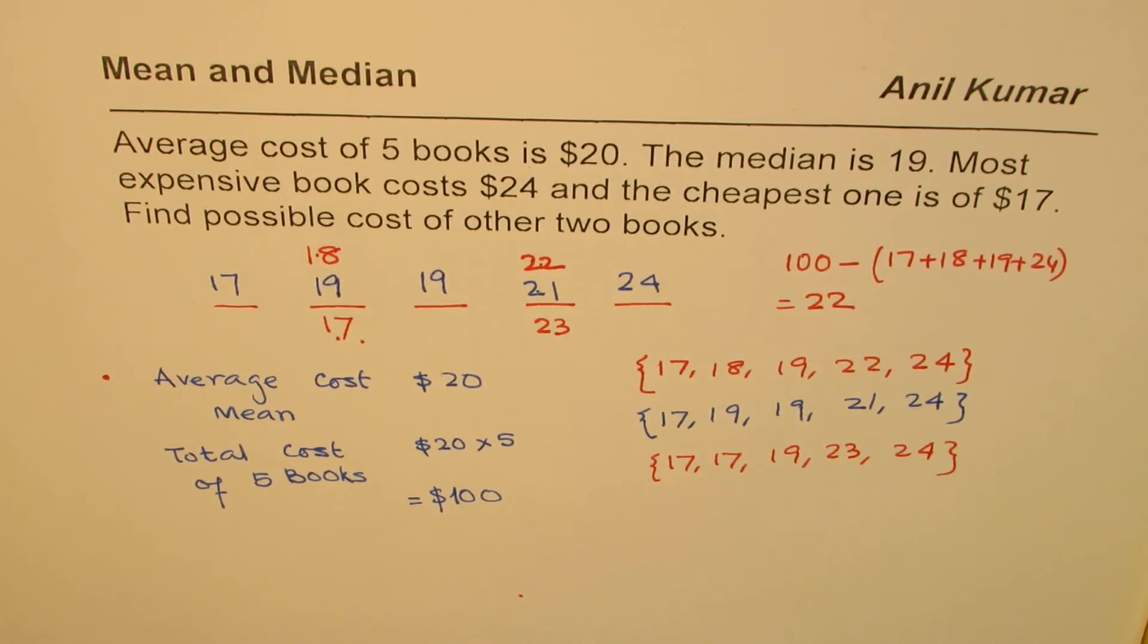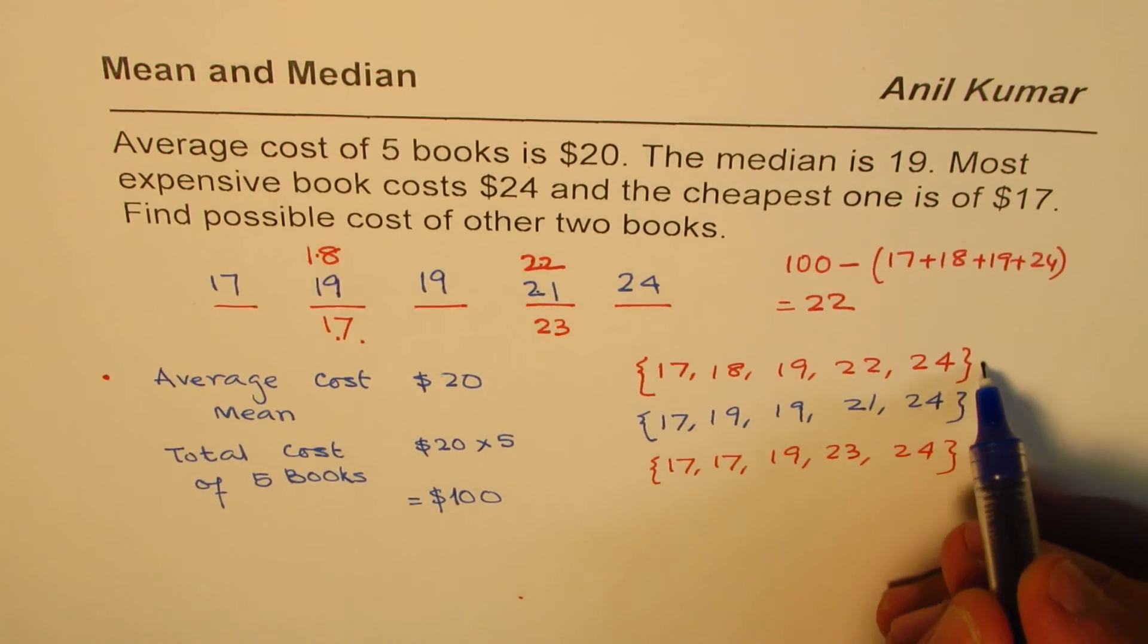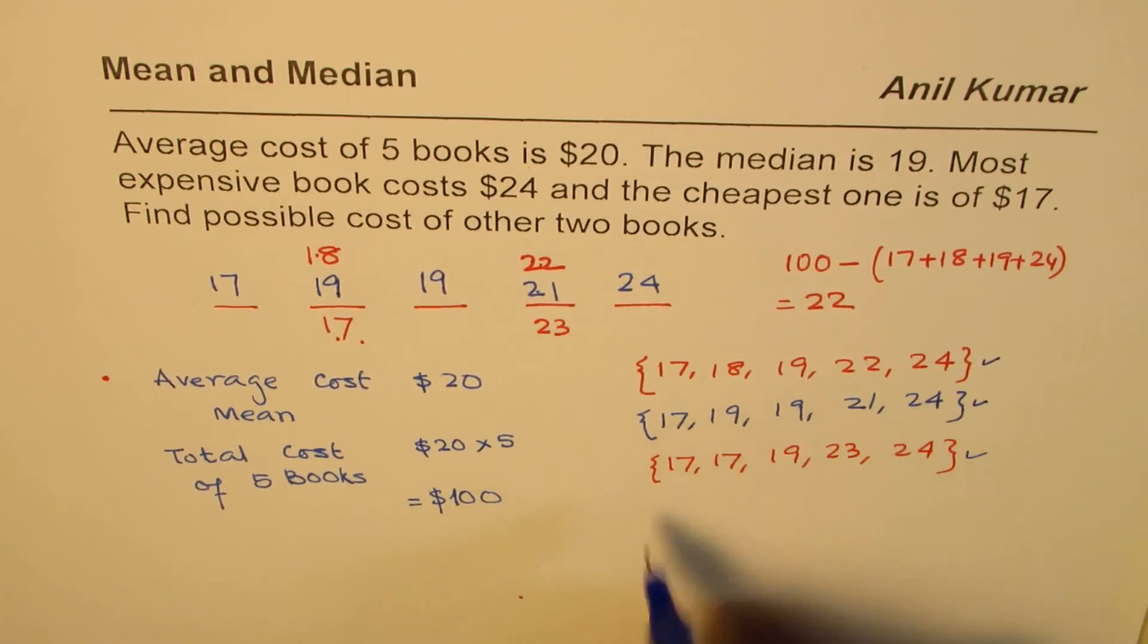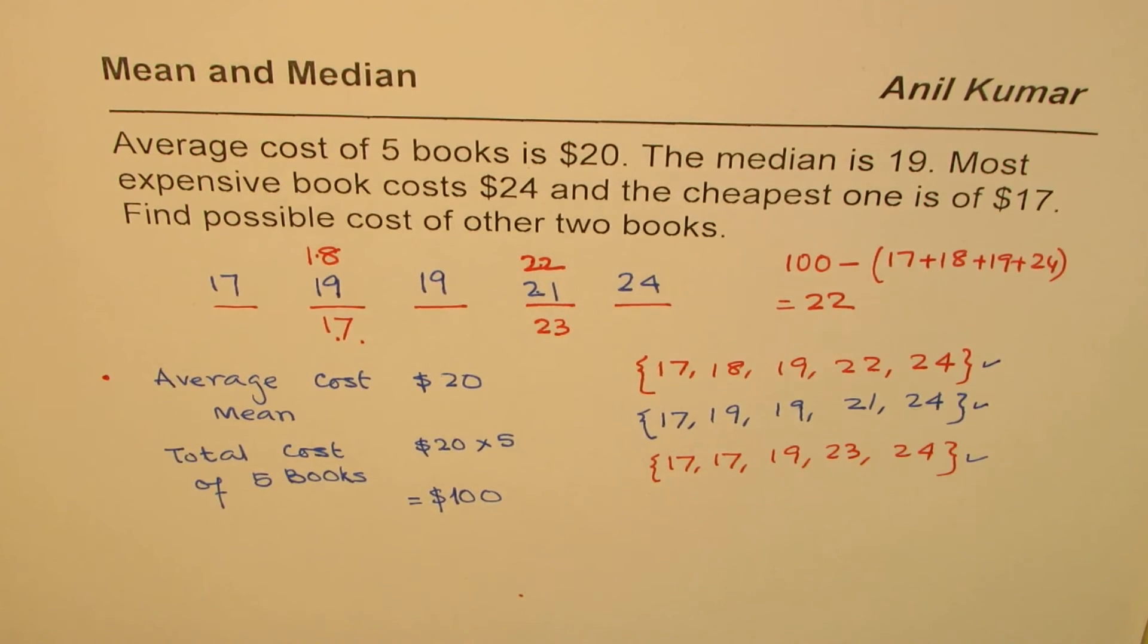So these are three possible answers. Do you see that? So the cost of those books could be, we could have this combination. I'm Anil Kumar and I hope you appreciate the method by which we have solved this question. You can always share and subscribe my videos. Thank you and all the best.